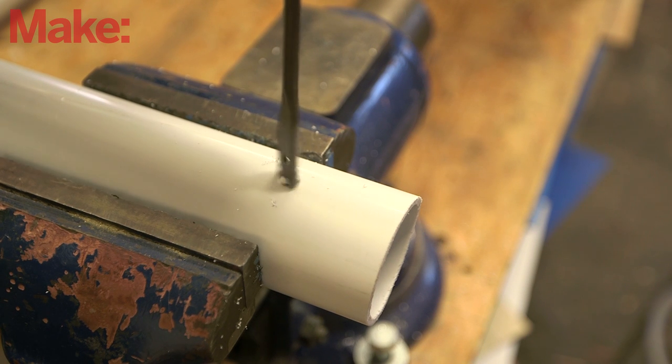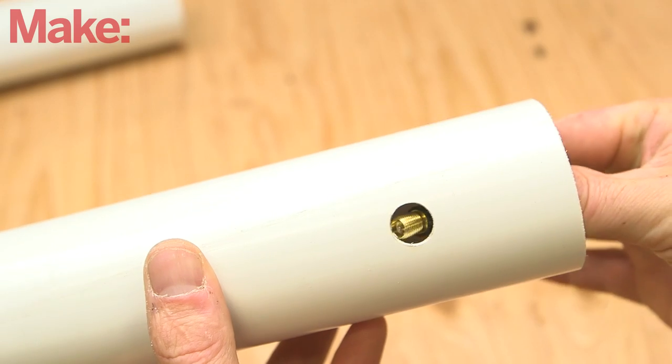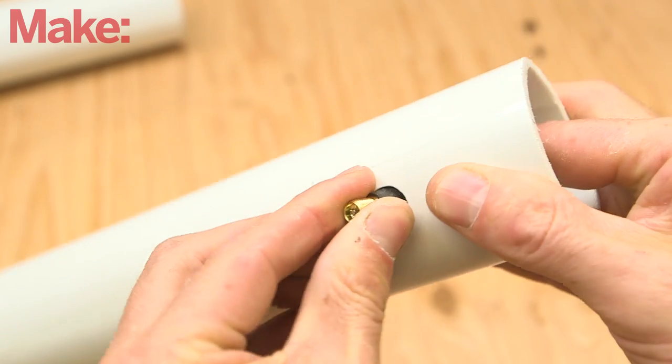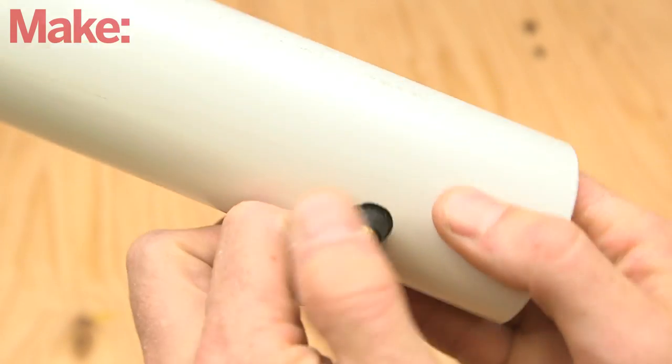Next, the valve stem needs to be installed in one of the 10-inch sections of pipe. Drill a hole that is smaller than the valve stem and wiggle the stem into place. Start with a smaller hole, since you can always enlarge it if it doesn't fit.